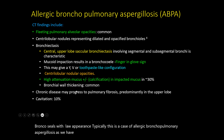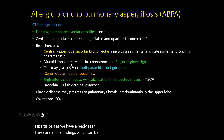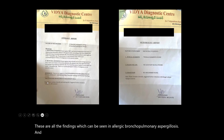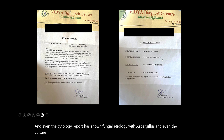These are all the findings which can be seen in allergic bronchopulmonary aspergillosis. The cytology report has shown fungal etiology with Aspergillus, and the culture/microbiology has also shown fungal elements. So this is the classical case of allergic bronchopulmonary aspergillosis.